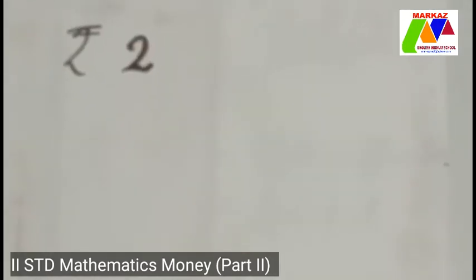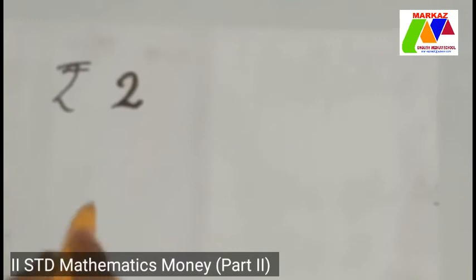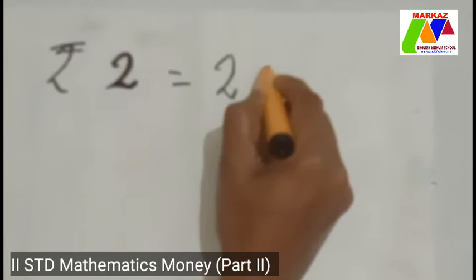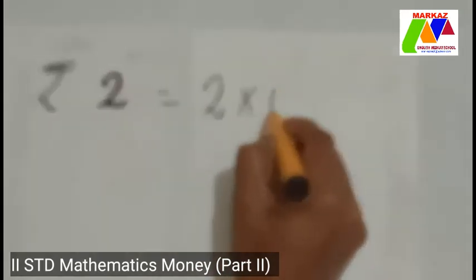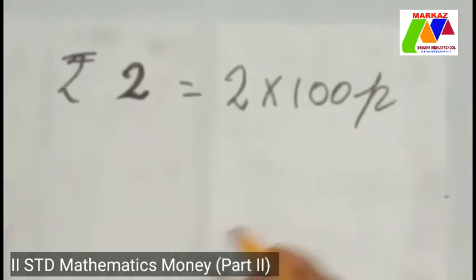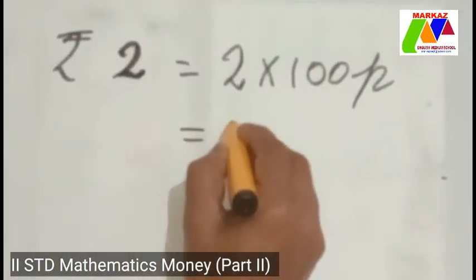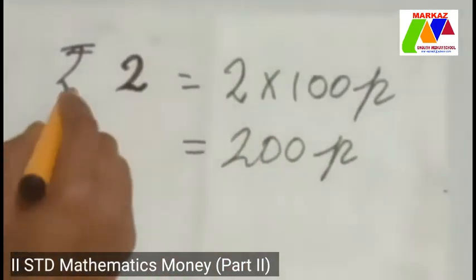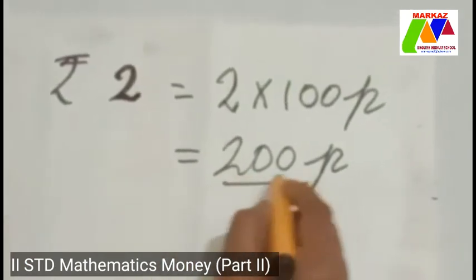Children, now can you tell me how many paise make two rupees? We know that one rupee is equal to hundred paise. So two rupees is equal to two into hundred paise, which is equal to two hundred paise.